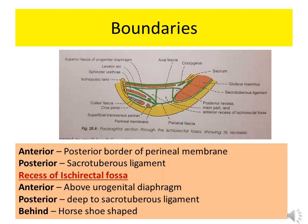The ischioanal fossa is not just a simple space — it has extensions called recesses. In front, there is the anterior recess located above the urogenital diaphragm. Behind, it extends deep to the sacrotuberous ligament. Since the right and left fossae communicate behind the anal canal, together they form a horseshoe shape.